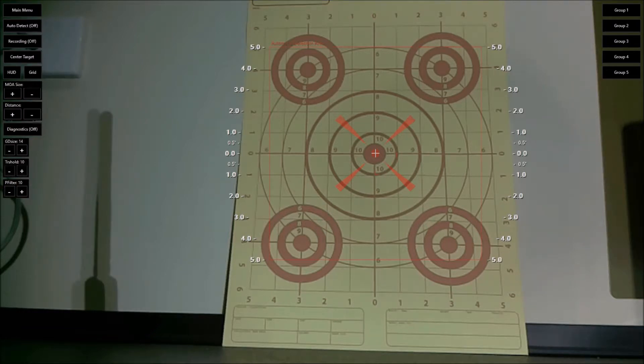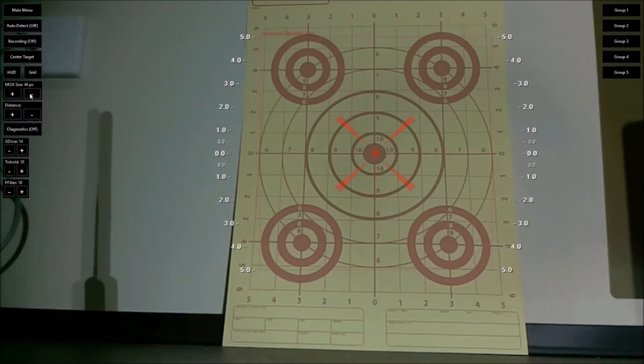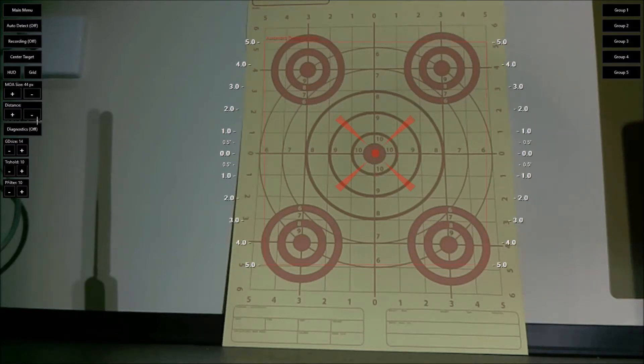You'll notice that this target has one inch squares on it which is helpful for sighting in your rifle, and what we can do is we can adjust the MOA size to match the one inch markers accurately on the target. It's pretty much spot-on right now, but that's how you get it so that it can sort out the automatic impact detection.